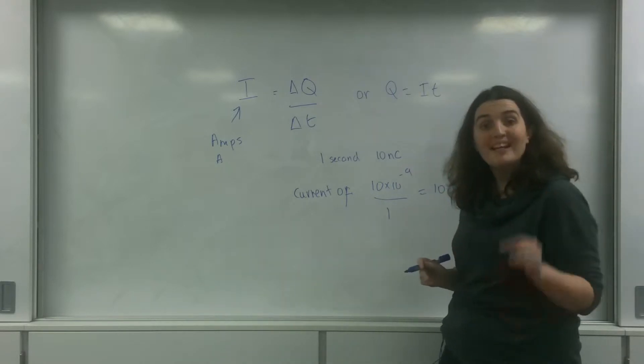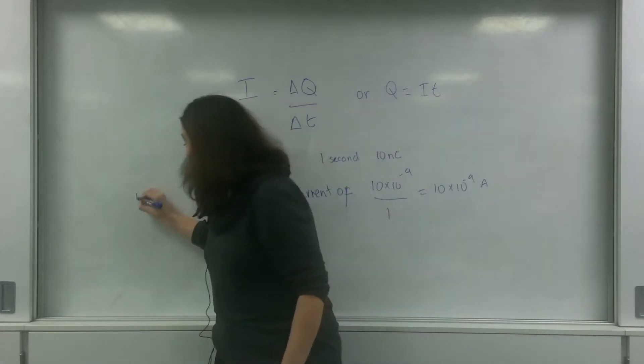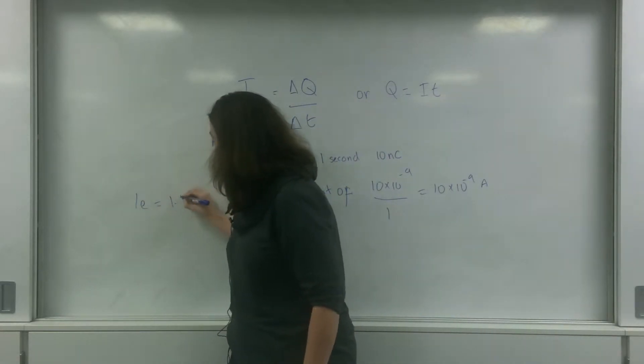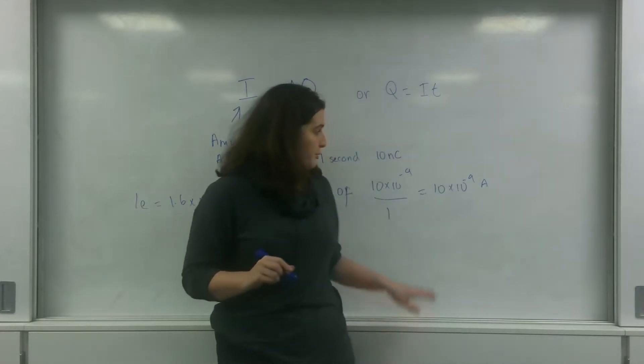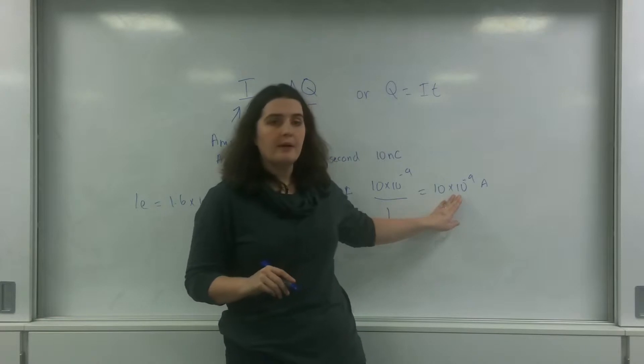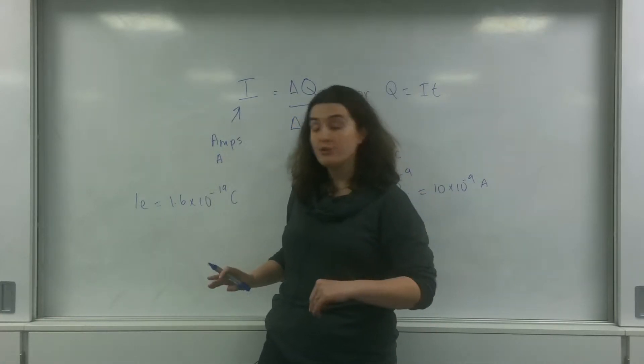I could work out how many electrons that were by knowing that one electron has a charge of 1.6 times 10 to the minus 19 coulombs. So if I took this number and divided it by this number, I could work out how many electrons that was.